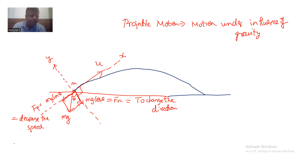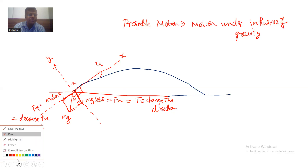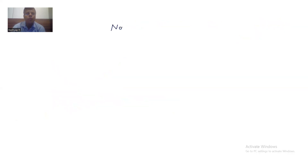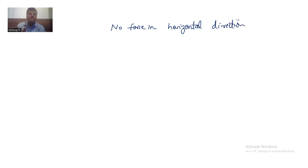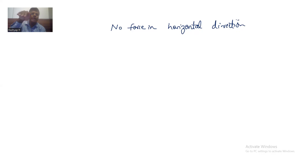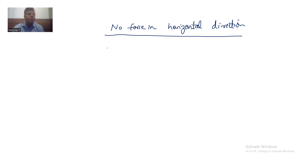If we analyze the basic assumptions in projectile motion, one key assumption is that there is no force in the horizontal direction. When you play badminton, the shuttlecock path is also an example of projectile motion — if you hit it, it goes in a certain direction, but air resistance can alter this path. In international competitions venues are enclosed, so the shuttlecock goes the way it is intended. For simplicity of analysis, we assume there is no force in the horizontal direction, which may not be true in the real world.